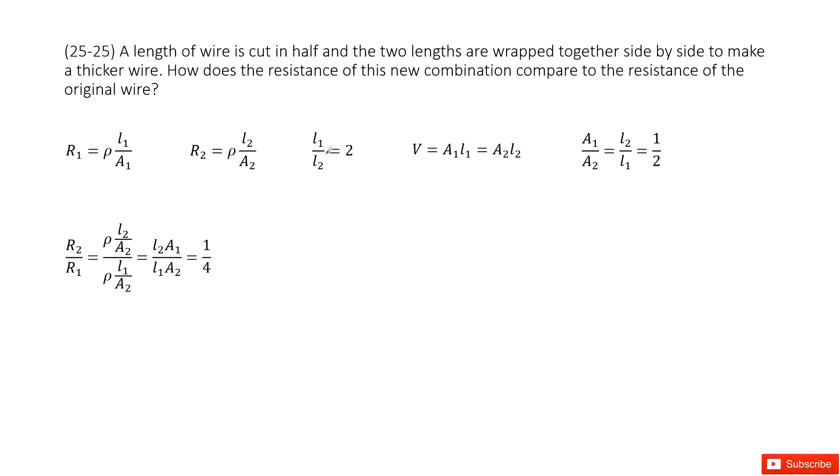We can see we have a length of wire cut in half and the two lengths are wrapped together side by side to make a thicker wire. The question asks what is the resistance for the new combination compared with the original one. So, how can we do that?